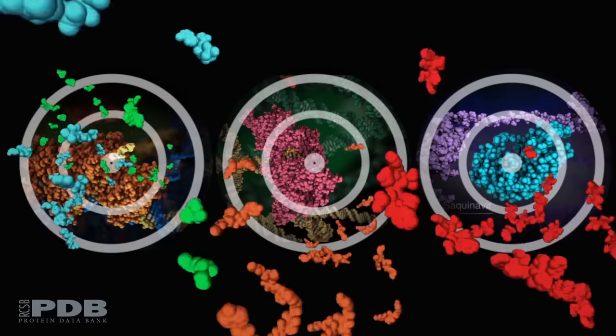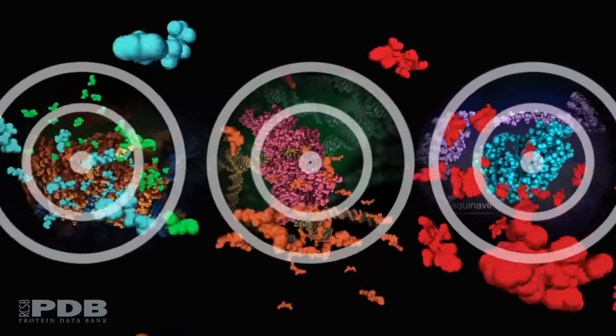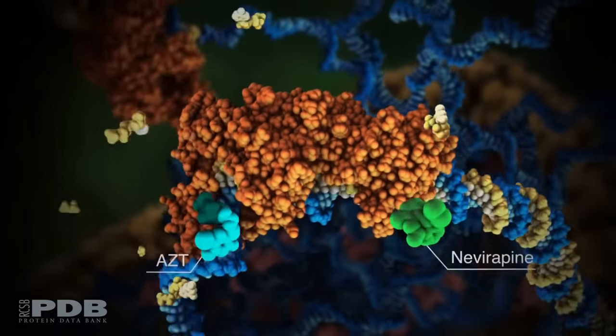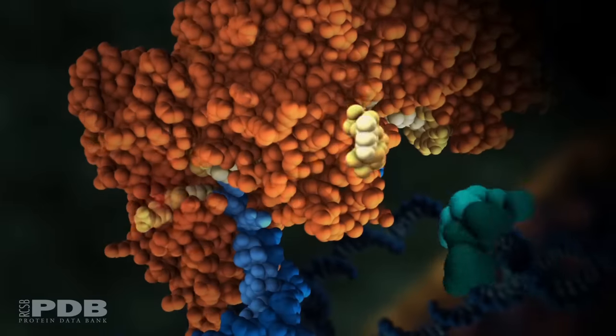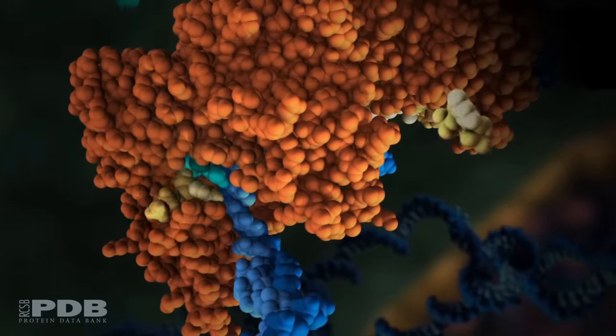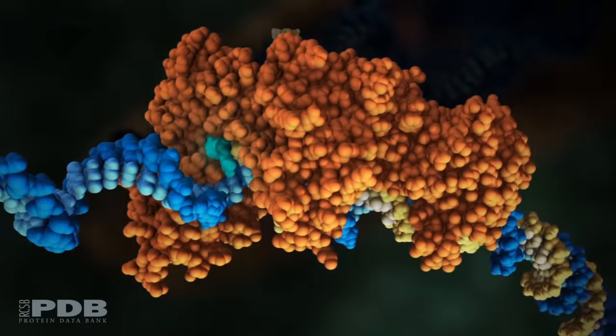HIV enzymes are targets for drug therapy. Two types of drugs block reverse transcriptase. Drugs like AZT mimic the normal building blocks of DNA, but prematurely terminate the DNA chain.